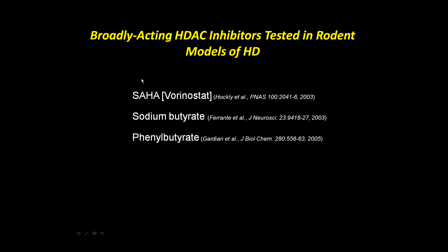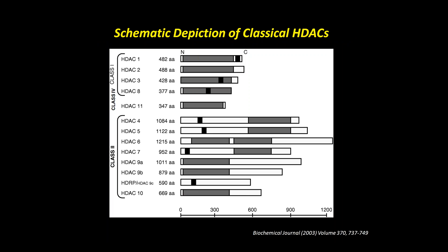About 10 years ago, three major papers used broadly acting HDAC inhibitors — SAHA, sodium butyrate, and phenylbutyrate — in rodent models of HD, finding improved HD phenotypes but with toxic effects: the mice lost weight and became sick. This is because the HDAC family is large — 18 different HDACs in humans, divided into four classes. Class 1 includes HDACs 1, 2, 3, and 8. Class 2 includes HDACs 4, 5, 6, 7, 9a, 9b, and 10. Class 3 are the sirtuins, and HDAC 11 is the single class 4 member.